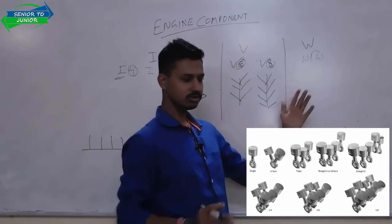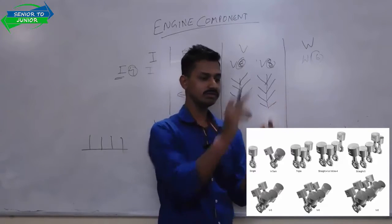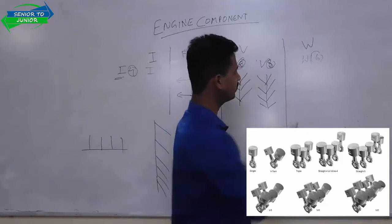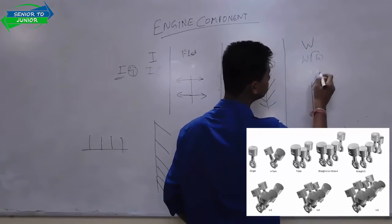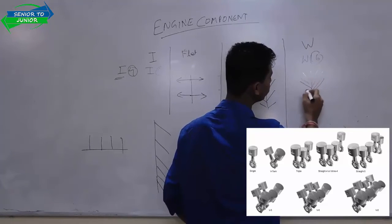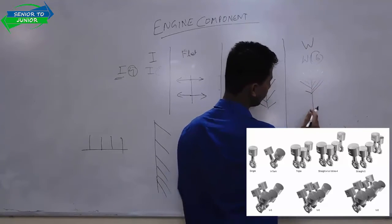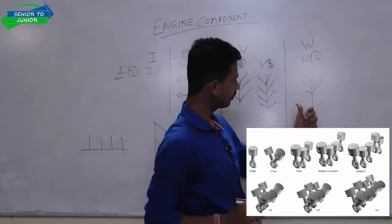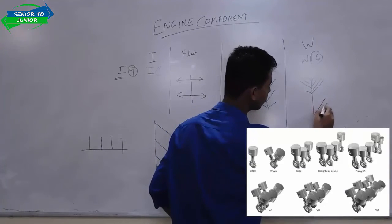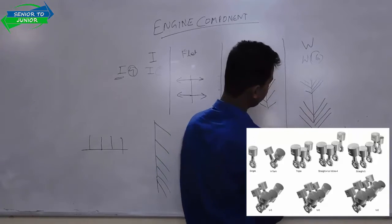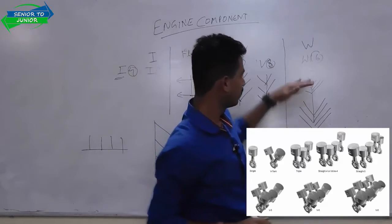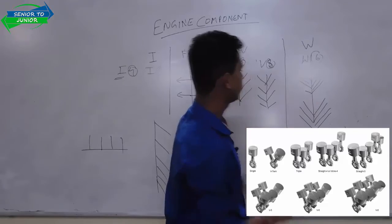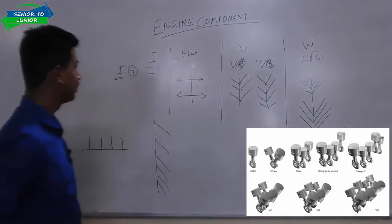In a W layout the cylinders are arranged in a W shape. W16 means 16 cylinders arranged in four groups of four in a W configuration. It is difficult to illustrate in a 2D diagram, but imagine the cylinders arranged like the letter W with four cylinders in each arm.